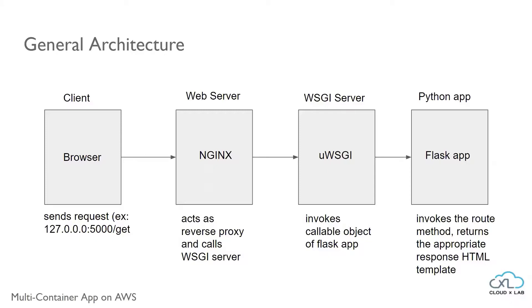Further, we also need to configure the WSGI server to let it know what the callable object is that it needs to invoke, where it is located, etc.